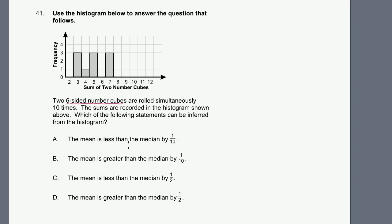The first one says the mean is less than the median by 1 tenth. They're comparing the mean and the median in every one of these choices. So we can actually look at this histogram and figure out all of the results that happened. So the sum, we got three three times. So we got three threes. Three, three, three. We got one four. We got three fives. Five, five, five. And then we had no sixes. And then we had three sevens. Seven, seven, seven.